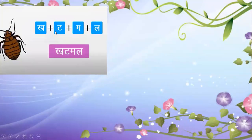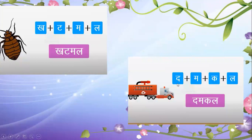Yes, now the next word. You can see the picture of Khatmal. Khatmal means bed bug. Like a mosquito, Khatmal also bites. Now what is the next word? Next word is Damkal. Kya hai yeh? Damkal means fire engine. You can see the picture — Damkal means fire engine.